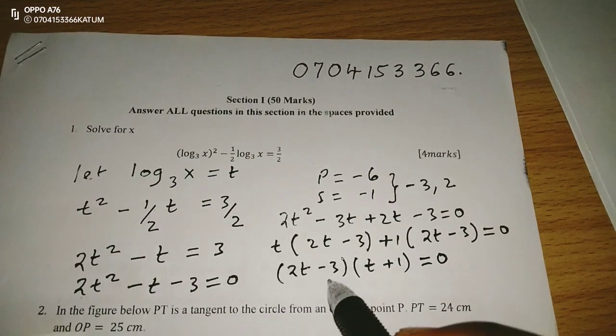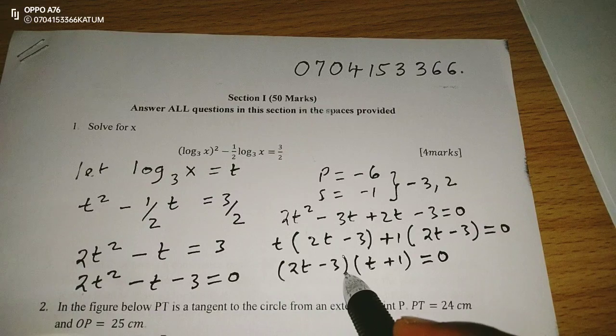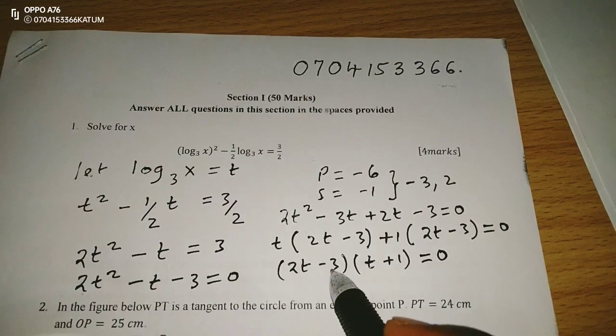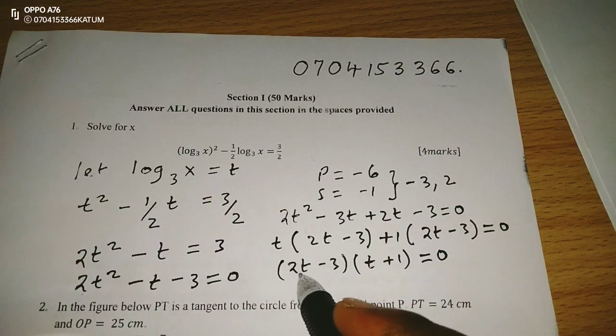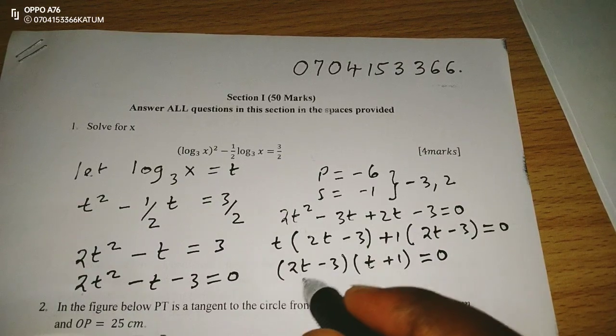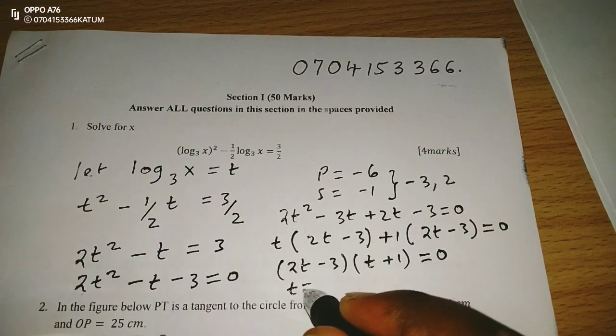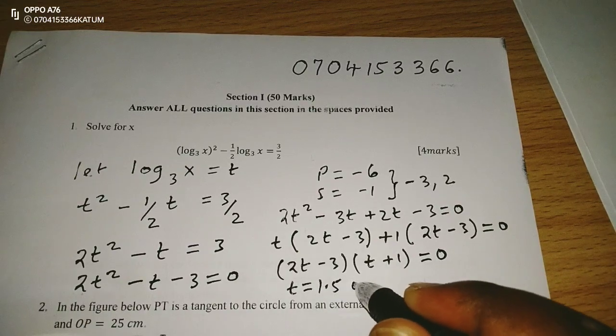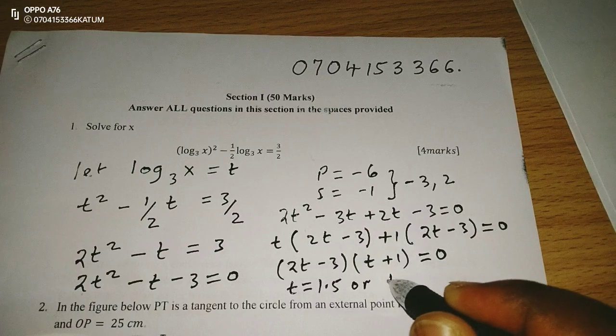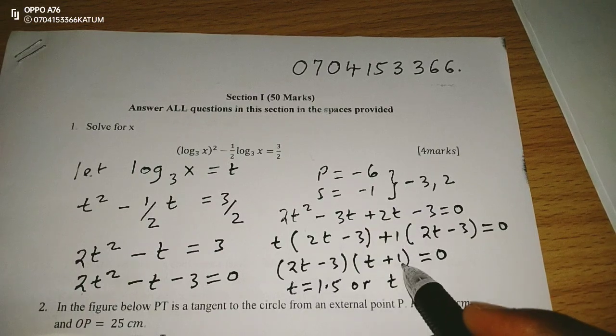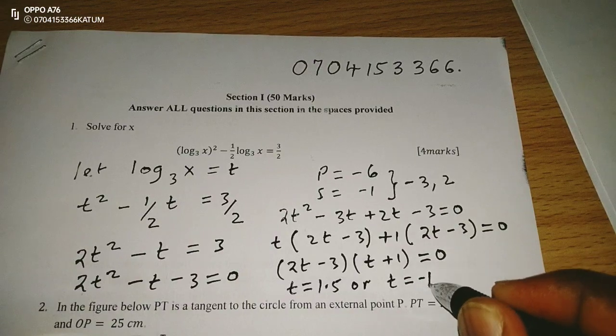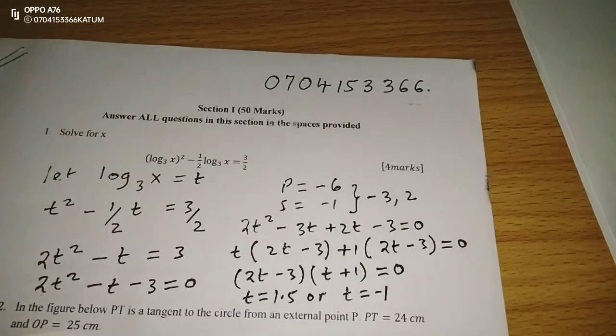Therefore, we can talk of now each factorized root equals to 0 independently. So 2t minus 3 equals to 0 will give us 2t equivalent to 3. And the value of t is going to be 3 out of 2, which is 1.5. Or when t plus 1 equals to 0, then t equals to negative 1. So those are the values of t.